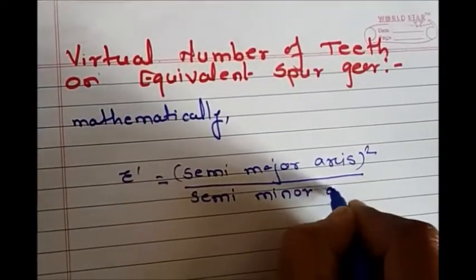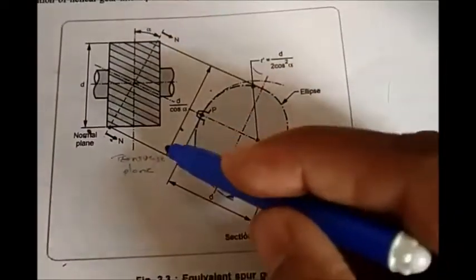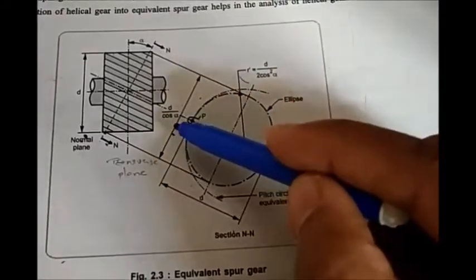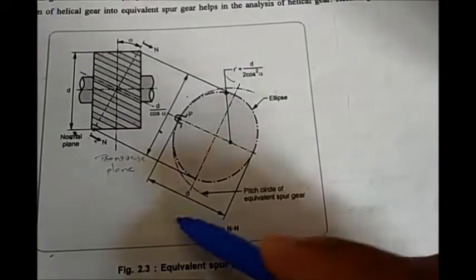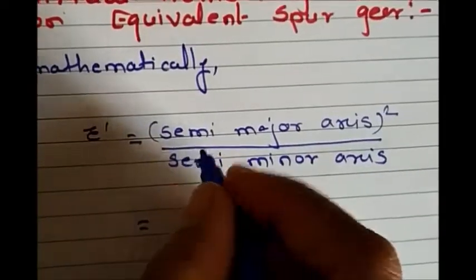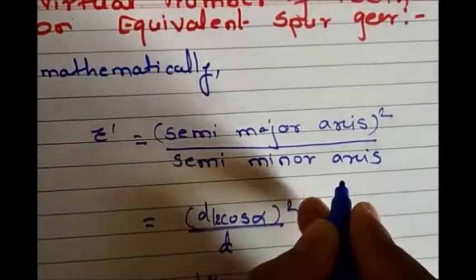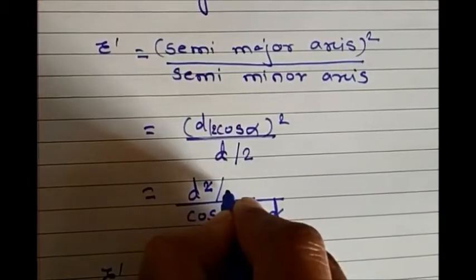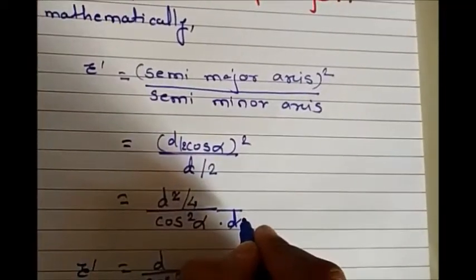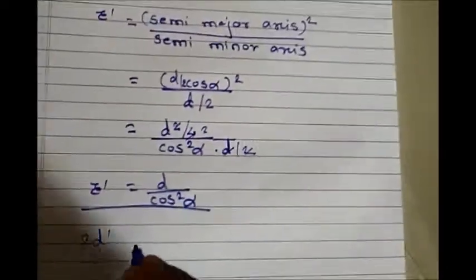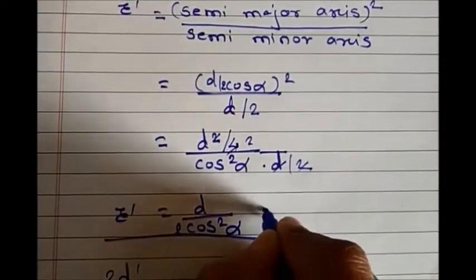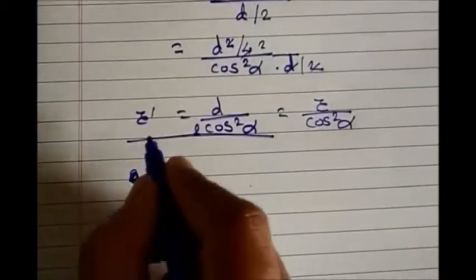The semi-major axis is d/(2cosα) since the total major axis is d/cosα, and the semi-minor axis is d/2. Substituting: r' = (d/2cosα)² / (d/2) = (d²/4cos²α) / (d/2). The 2 and 4 cancel, giving r' = d/(2cos²α). In other words, r' = r/cos²α, where r = d/2.